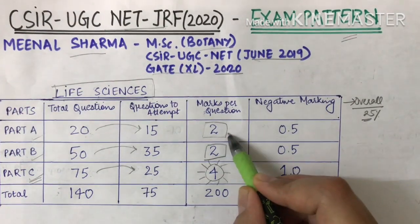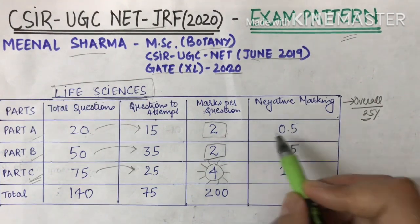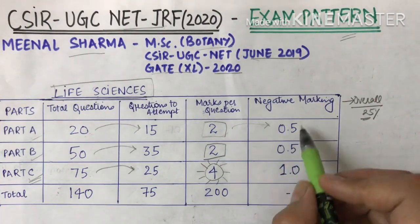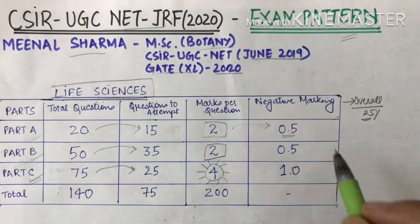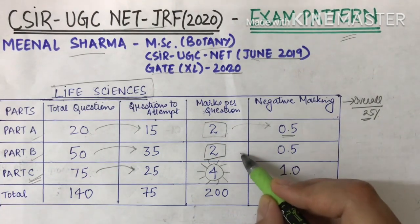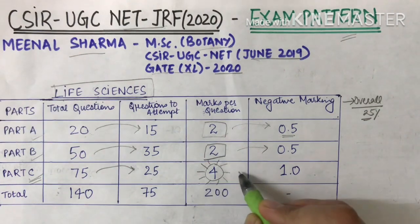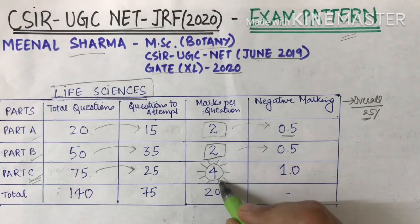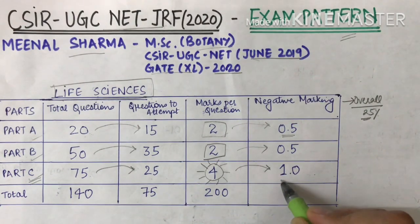If you have 2 marks per question for the right answer in Part A and B, you will be deducted for the wrong answer. In Part C, you get 4 marks for the right answer, but 1 mark is deducted for every wrong question.